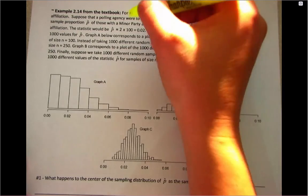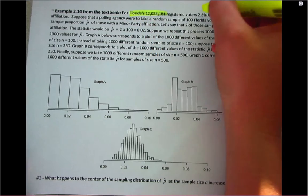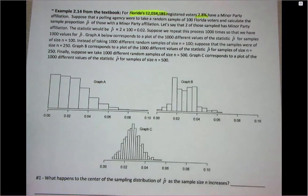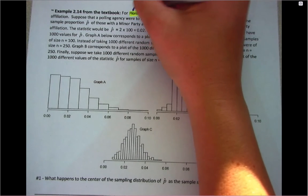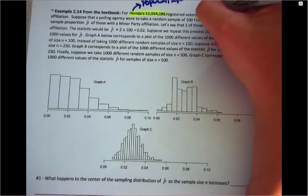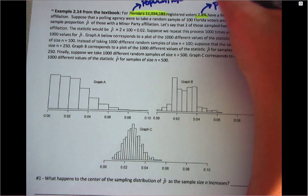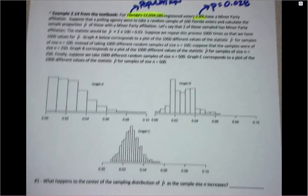For this example, there is a population of Florida registered voters, and of those Florida registered voters, 2.8% said they have a minor party affiliation. So this is our population, and because this number refers to that population, this would be p. Written in decimal format, p would be 0.028.